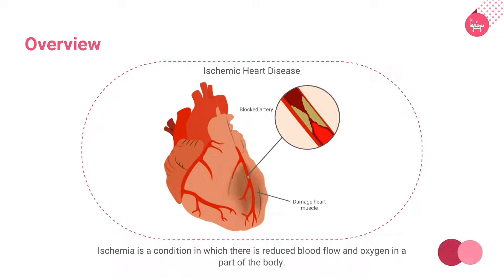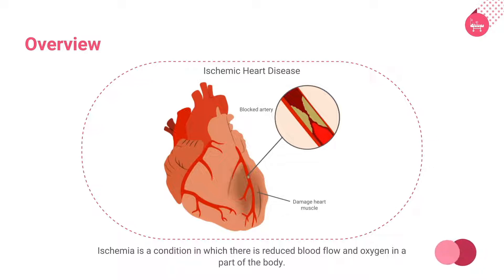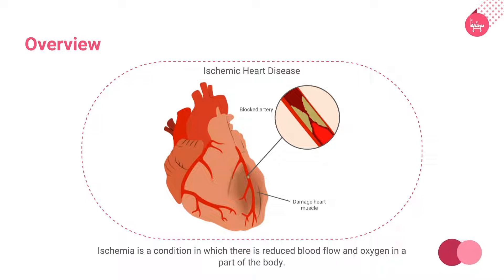Ischemia is a condition in which there is reduced blood flow and oxygen in a part of the body. Ischemic heart disease, or IHD, is what the layman refers to as having a heart problem. It is due to narrowed heart arteries, in which less oxygen in blood reaches the heart, and it can ultimately lead to a heart attack.